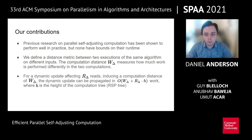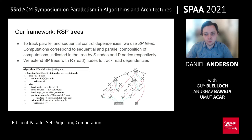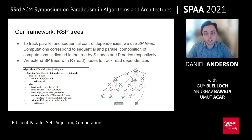Our framework is built upon RSP trees. RSP trees are based on SP trees, or series-parallel trees, previously used for race detection. SP trees denote the order of computations using S nodes, indicating two children must run sequentially, and P nodes, indicating children can safely run in parallel. We extend SP trees with read nodes, or R nodes, which track where explicit read operations occur. Two reads are safe to execute in parallel if and only if their lowest common ancestor in the RSP tree is a P node. An example RSP tree for a self-adjusting divide-and-conquer sum algorithm is shown on the right.